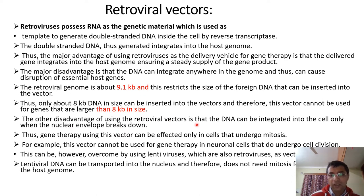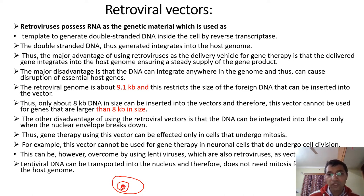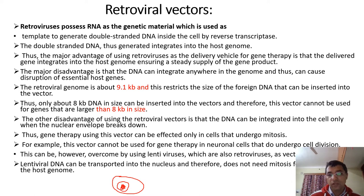Another disadvantage is that retroviral vectors can only integrate their DNA into the cell when the nuclear envelope breaks down. The genome is confined in the nucleus, and only when the nuclear envelope breaks down will integration occur; otherwise it cannot be integrated. This means that gene therapy using these vectors can only be effective in cells that undergo mitosis.